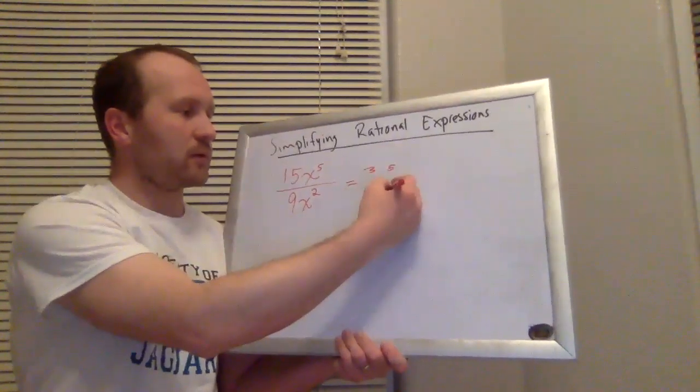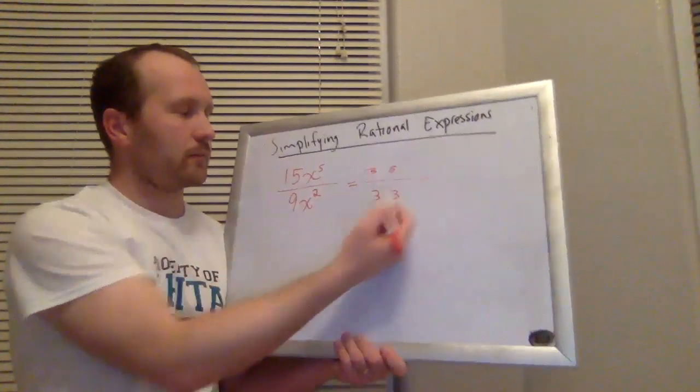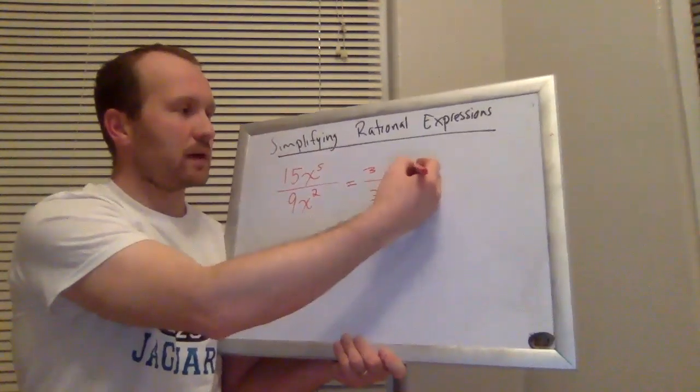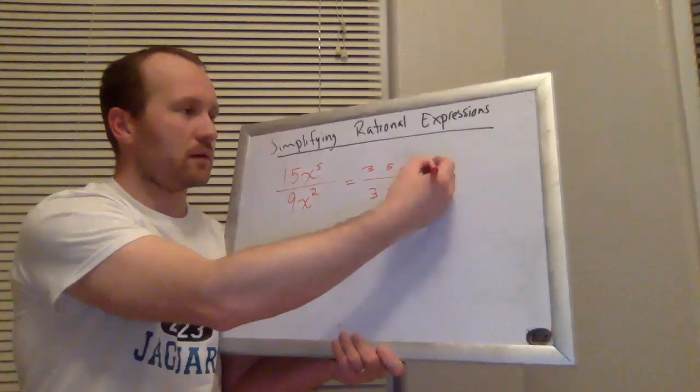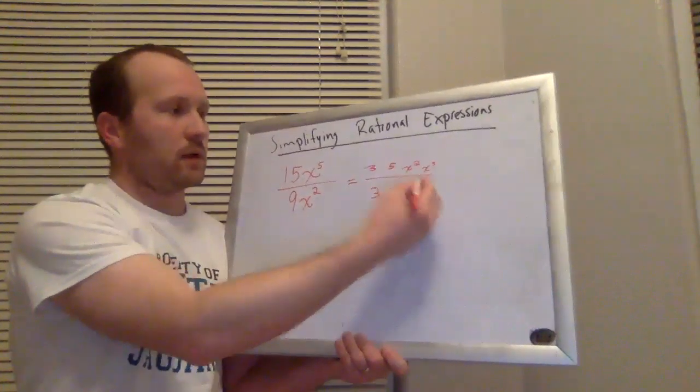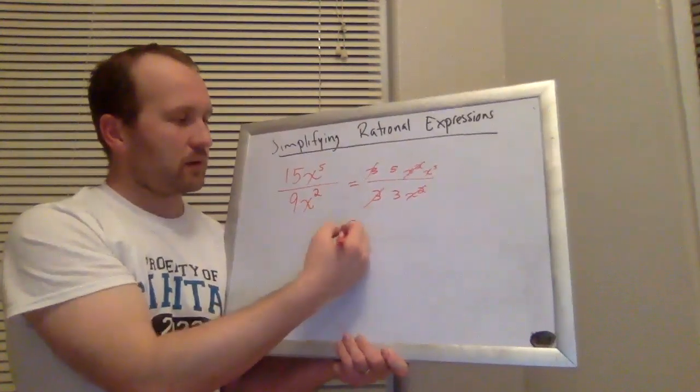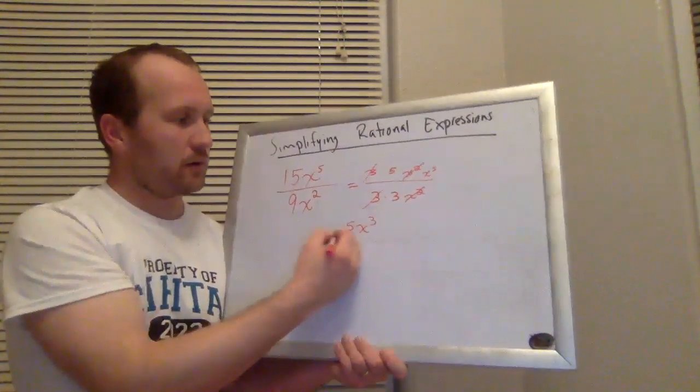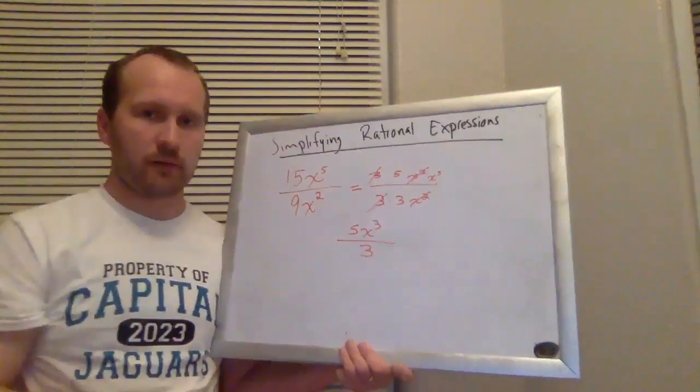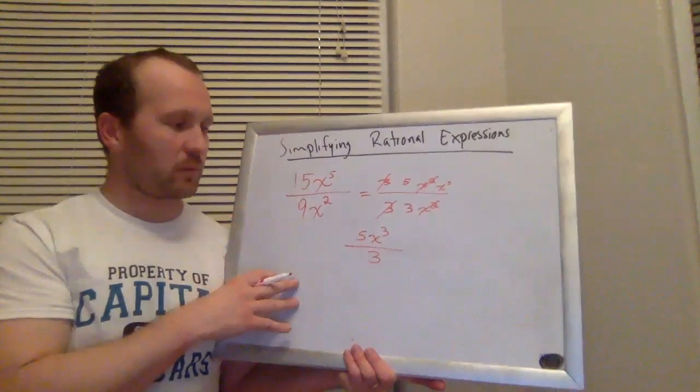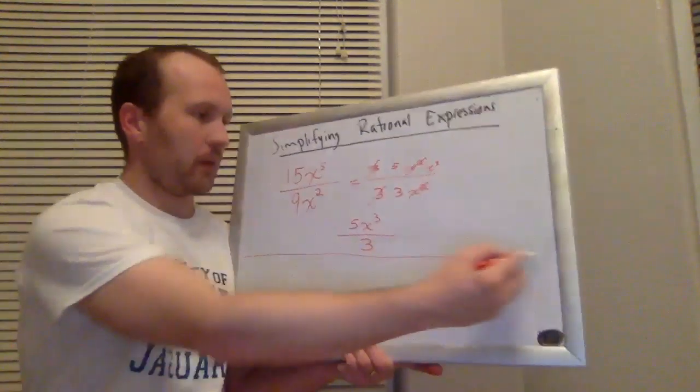And what's left up here is a 5. What's left down here is a 3. x to the fifth and x squared. Well, x to the fifth is x squared times x to the third. So the x squared cancel. The threes cancel. And I'm just left with 5x to the third over 3. Just by canceling out any common factors that I had top to bottom.